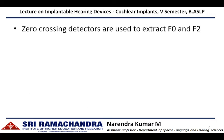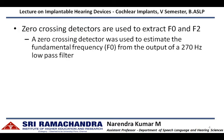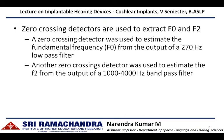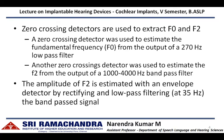Zero crossing detectors are used to extract the fundamental frequency and second formant frequency. One zero crossing detector estimates the fundamental frequency from the output of a 270 Hz low-pass filter — whichever frequency has maximum energy from this filter is extracted as the fundamental frequency. Another zero crossing detector estimates the second formant frequency from the output of a 1000 to 4000 Hz bandpass filter. The amplitude of F2 is then estimated with an envelope detector by rectifying and low-pass filtering the bandpass signal corresponding to F2.